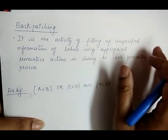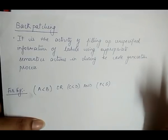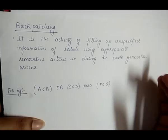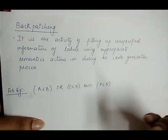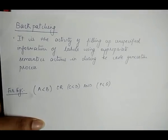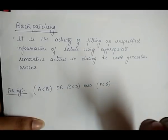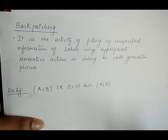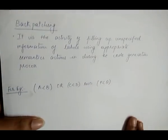As we already discussed how we generate a three-address code for a particular expression, if we are using any jump statement — if a condition is true then it goes somewhere, and if it is false then it goes somewhere else — that 'somewhere', the value specified as labels, we fill up with the help of backpatching.